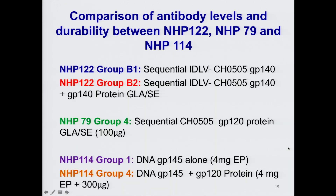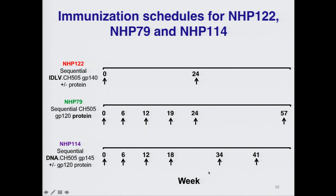We then compared the responses observed in our protocol to those induced in other studies using the same CH505 sequential approach. For the comparison, we selected two studies conducted through CHAVI-D: NHP79, in which animals were immunized with GP120 protein alone, and NHP114, in which animals received either DNA alone or DNA plus protein. The immunization schedules are quite different, as by the time we performed the second immunization in the IDLV-immunized animals, animals in the other two studies had already received four or five immunizations. We selected these studies because of the longer intervals between immunizations: six months for NHP79 and three months for NHP114.